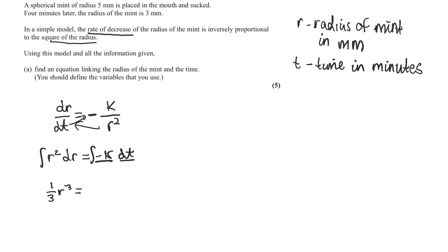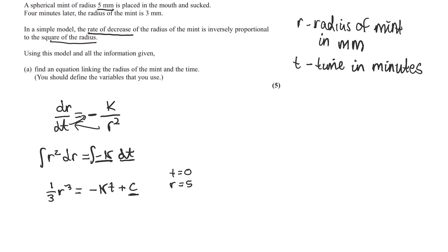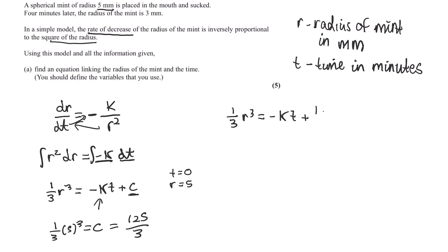Now we use the initial information. Initially the radius is 5, so when t equals 0, r equals 5. We plug in t equals 0 — the kt term goes away — and r equals 5 gives us a third r cubed equals c, so c equals 125 over 3. Our equation is now: a third r cubed equals minus kt plus 125 over 3.